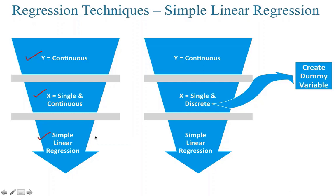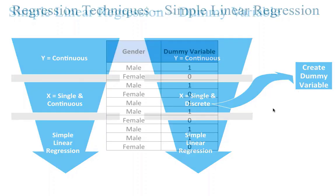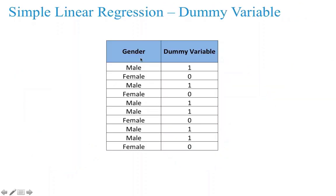However, if the output variable is continuous and you have a single input variable which is discrete in nature, you still proceed with simple linear regression, but you have to make some change — this discrete variable has to be converted to a dummy variable.